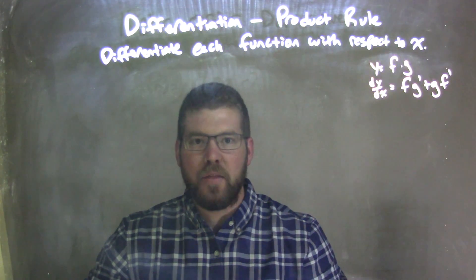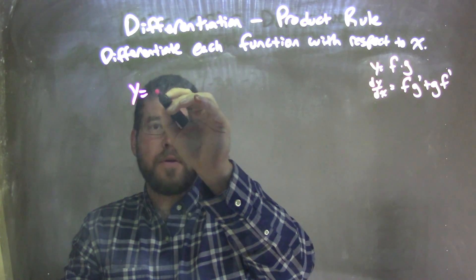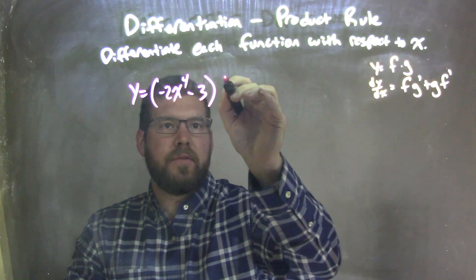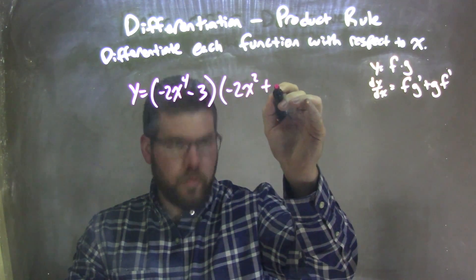So if I was given this function, y equals, parentheses, negative 2x to the 4th, minus 3, close parentheses, new parentheses, negative 2x squared plus 1.